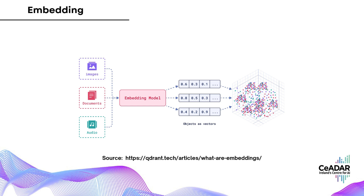Now, in the context of MLLMs, this idea of embeddings isn't just for text — it also applies to images. Imagine taking a picture of a dog. The model would encode that image into a vector in a similar way it does with text. Images that look similar or contain related content end up with vectors that are close to one another in this space. For instance, pictures of different types of dogs might cluster around a similar region, while pictures of cars would be far away.